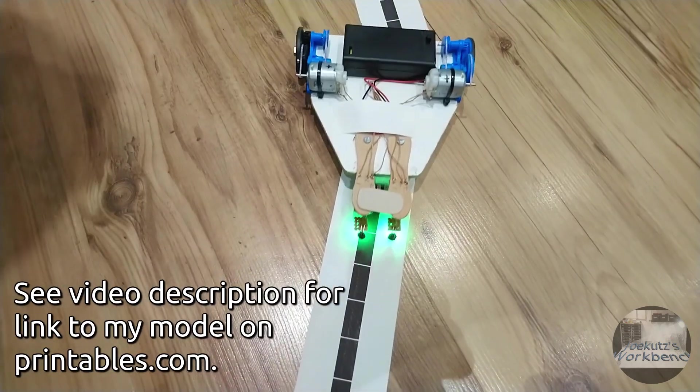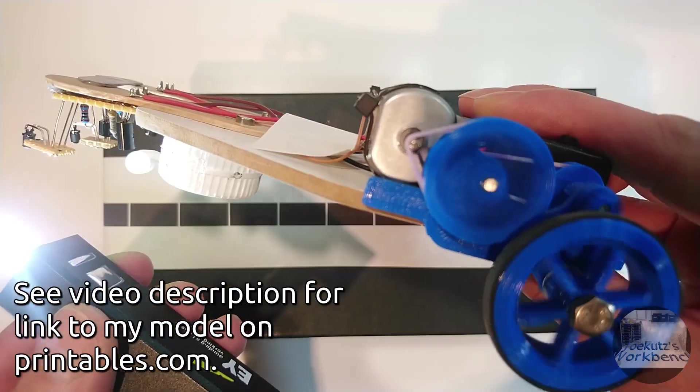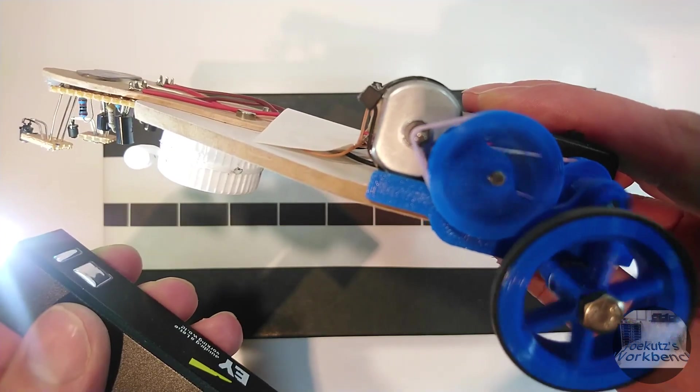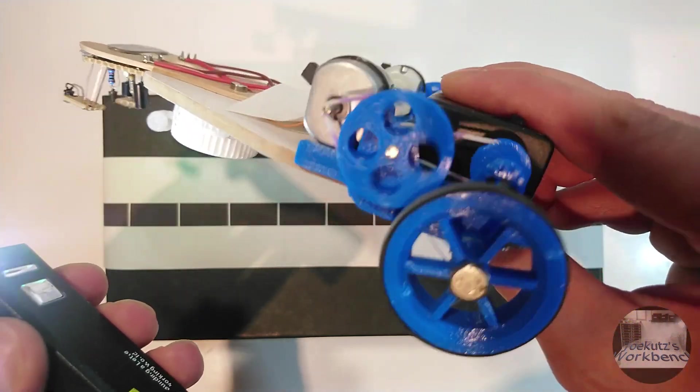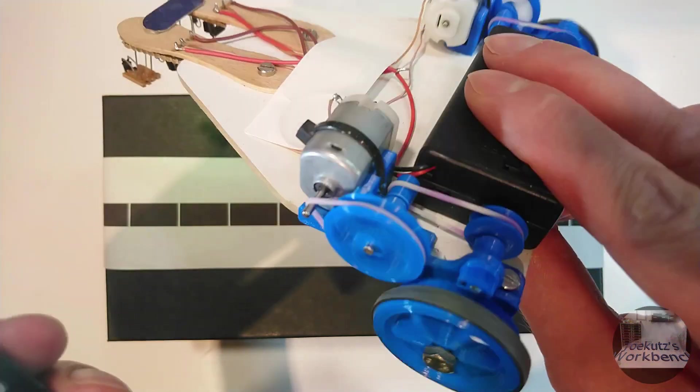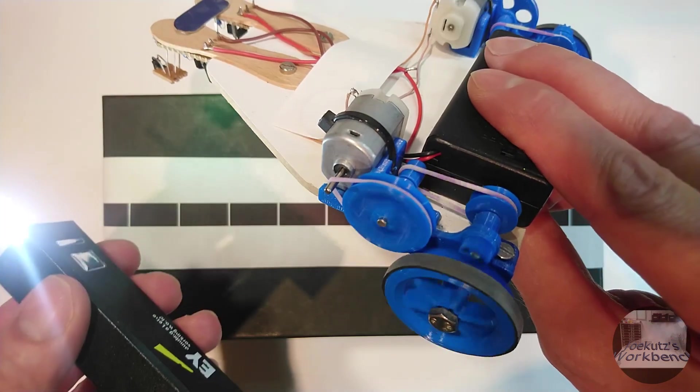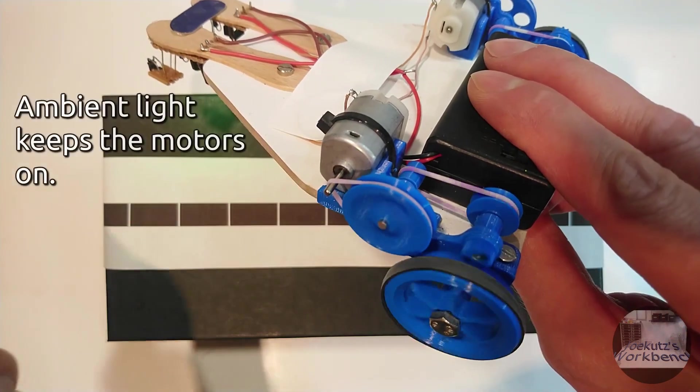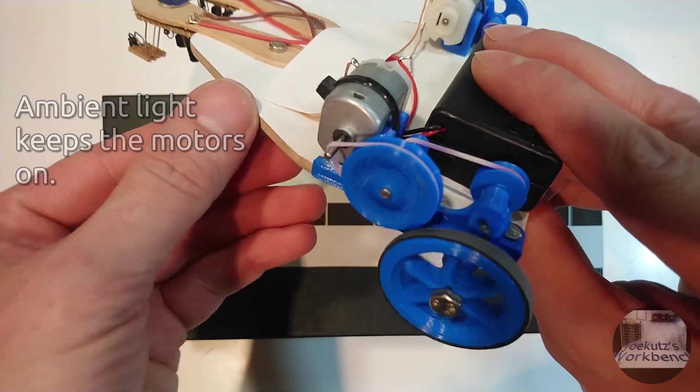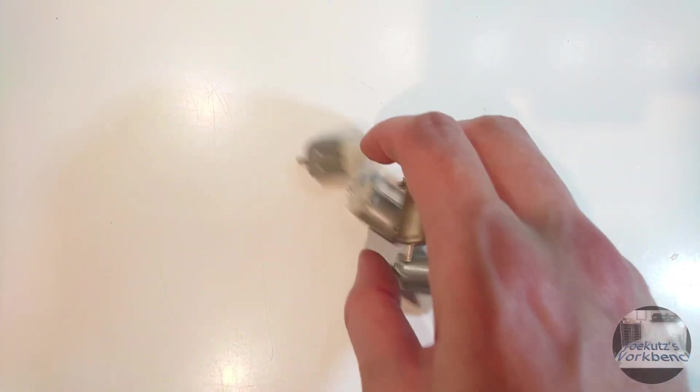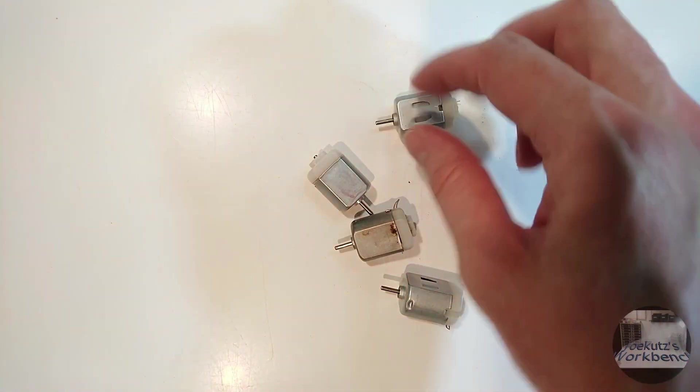They run on two AA batteries and have 3D printed drive units that use belts and pulleys to drive the wheels. Engineering these units was quite a bit of work and I ran into a challenge that I didn't expect to exist. Welcome to a deep dive into toy DC electric motors.